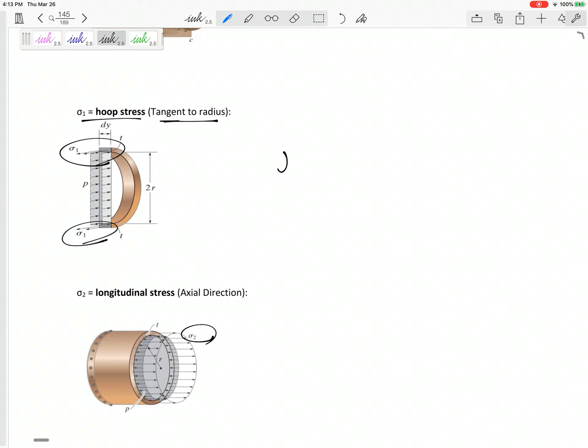And real briefly, we'll just say that the normal stress, the hoop stress tangent to the radius, is equal to pr over t, the pressure times the radius divided by the thickness. And so this sigma 2 is equal to pr over 2t, the pressure times the radius divided by 2, divided by the thickness.